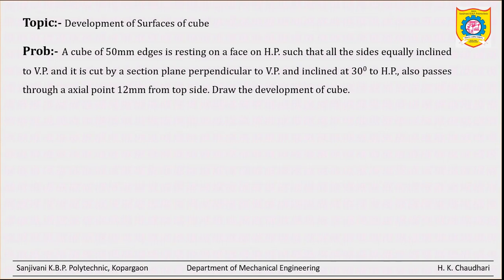Up till now, we have seen the problems of prism. So this problem is now cube. We know cube has 4 edges on top surface, 4 edges on bottom surface, and 4 vertical edges. As it is a cube, all the edges have the same length. Here it is given 50mm.